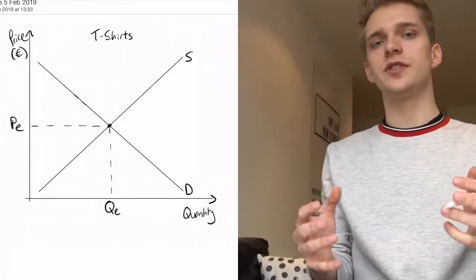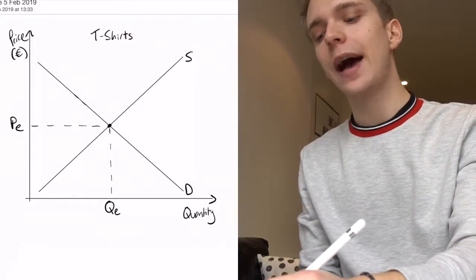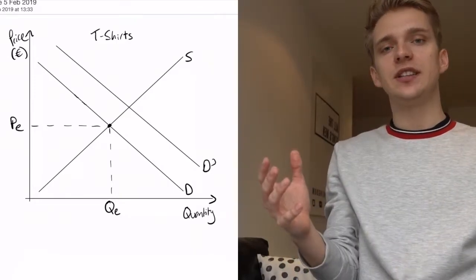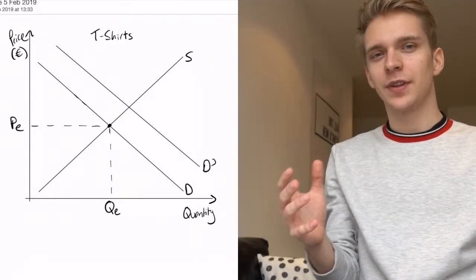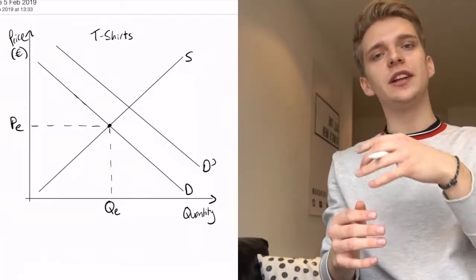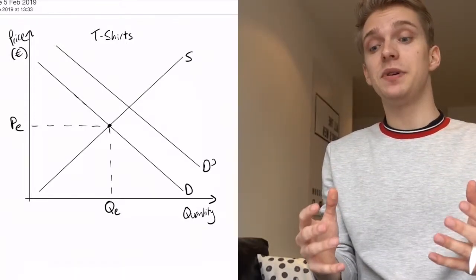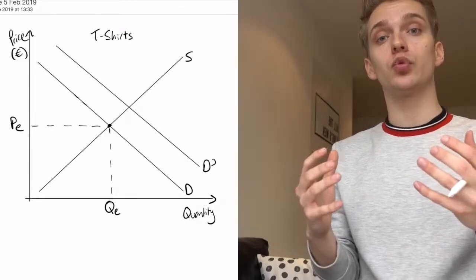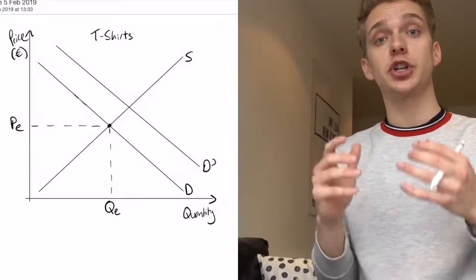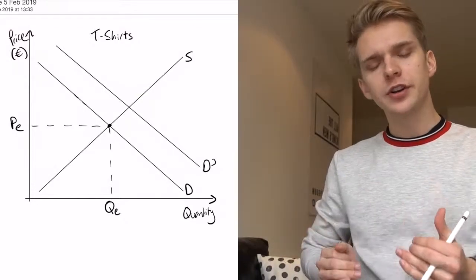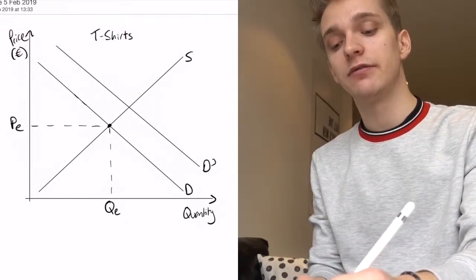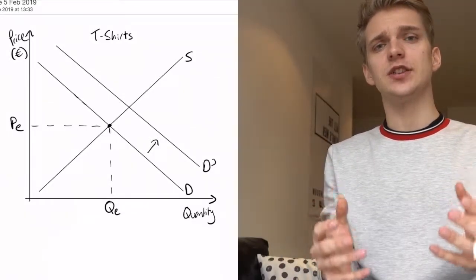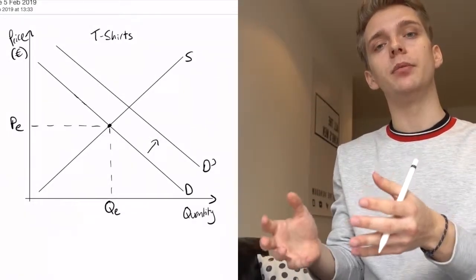Now let's suppose there's a situation in which the demand curve shifts outwards. What might be a reason for that? If you want to review that, you can go back to video one. But one reason might be that t-shirts just became really fashionable, so suddenly everyone wants to buy t-shirts. The demand for t-shirts is much higher than before, so the demand curve has shifted outwards from D to D prime. The question is: what's going to happen to the equilibrium in this situation?